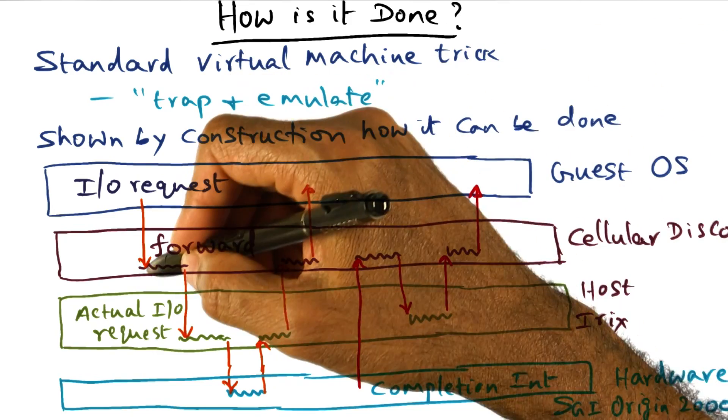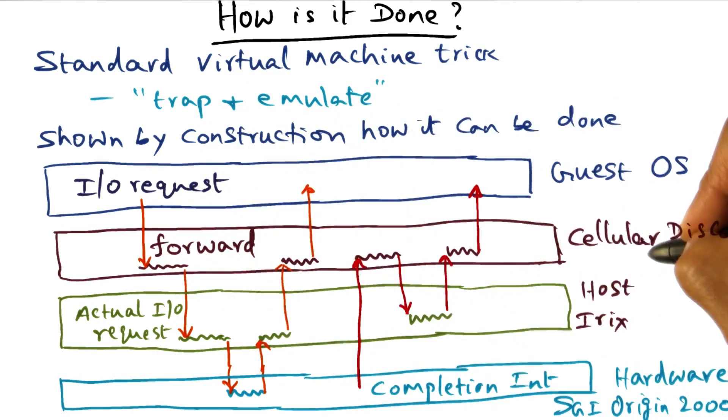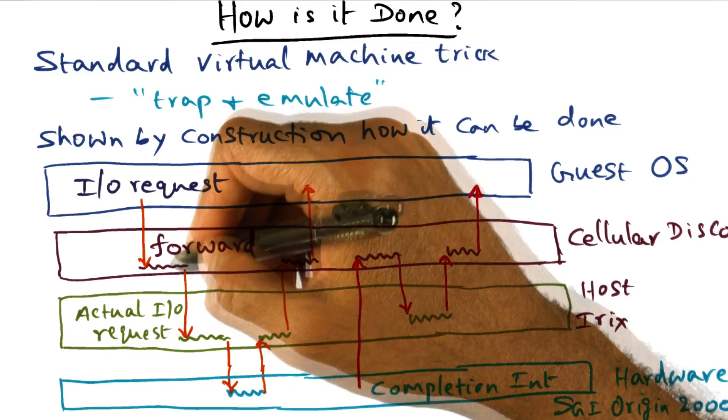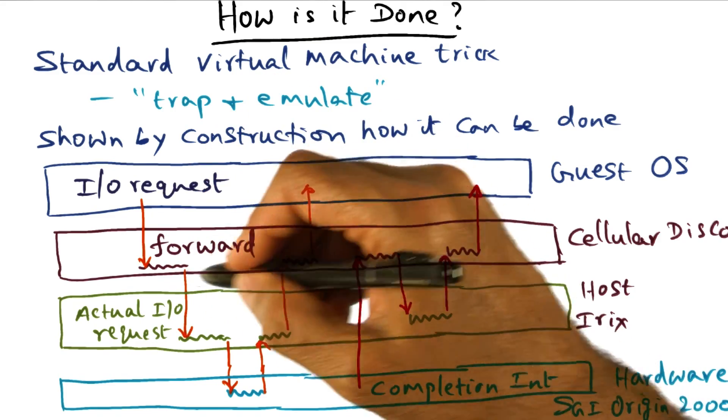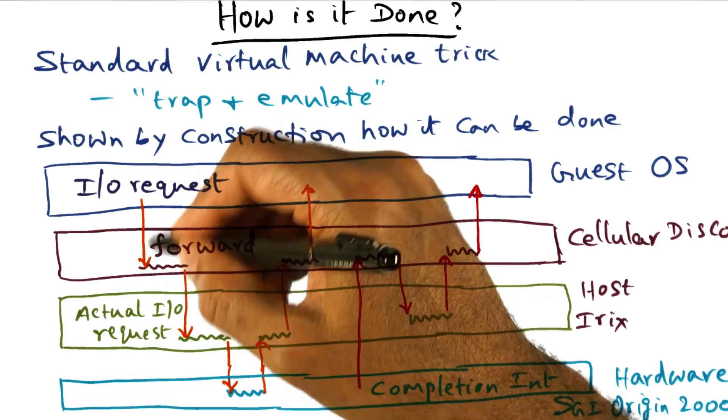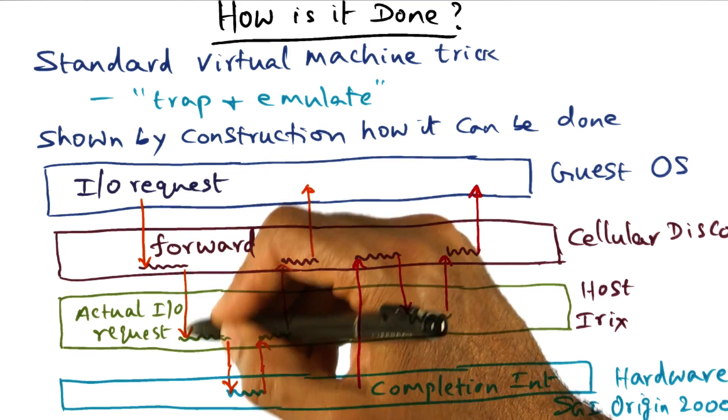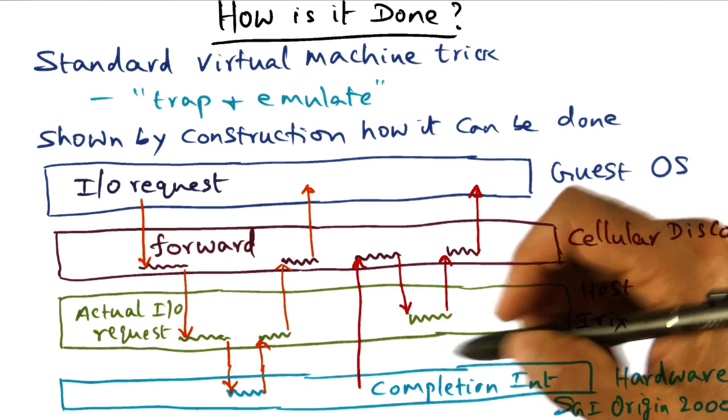The guest operating system makes an I/O request, and this results in a trap into the VMM layer, Cellular Disco. Cellular Disco rewrites this request as coming from it rather than from the guest operating system and makes the actual I/O request. This is the virtual request coming from the guest operating system. This is the actual I/O request that is passed down to the host operating system, Irix in this case.